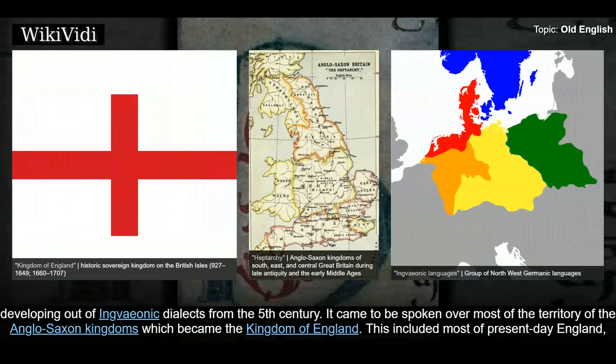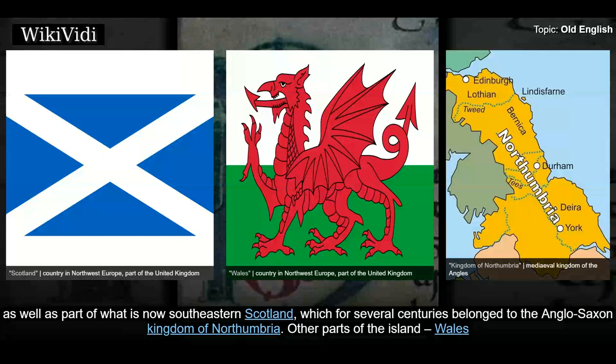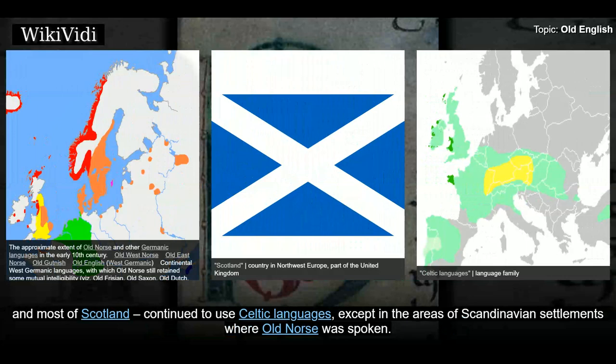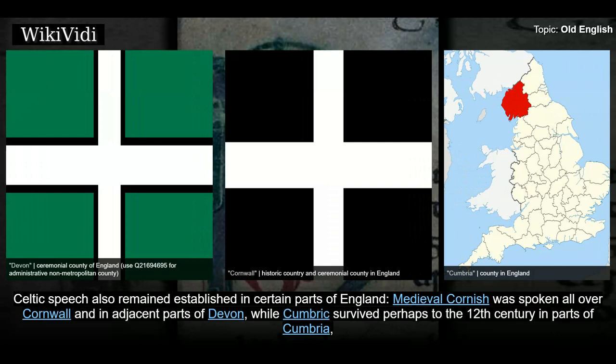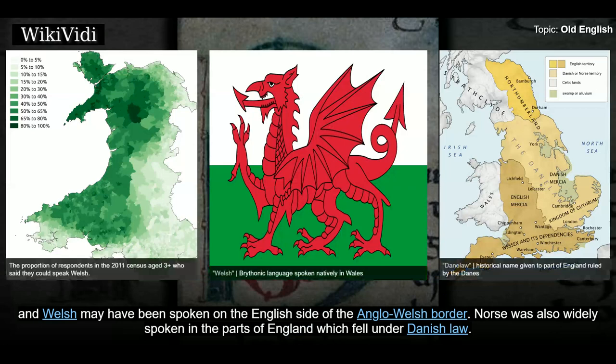Old English is a West Germanic language, developing out of Ingvionic dialects from the 5th century. It came to be spoken over most of the territory of the Anglo-Saxon kingdoms, which included most of present-day England and part of what is now southeastern Scotland. Other parts of the island — Wales and most of Scotland — continued to use Celtic languages. Medieval Cornish was spoken all over Cornwall and in adjacent parts of Devon, while Cumbric survived perhaps to the 12th century in parts of Cumbria.